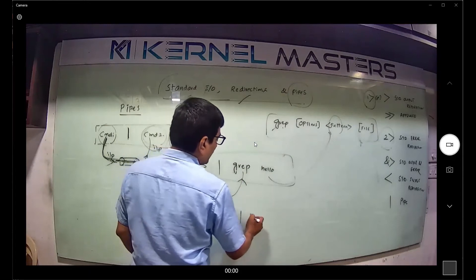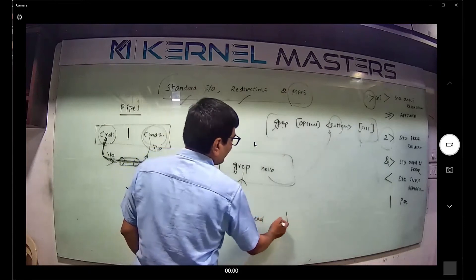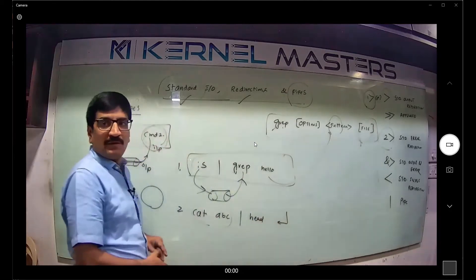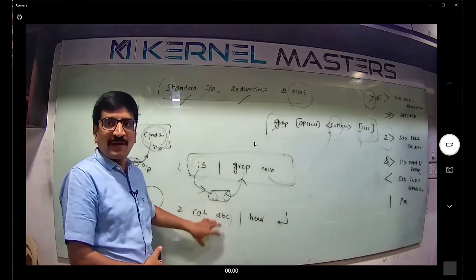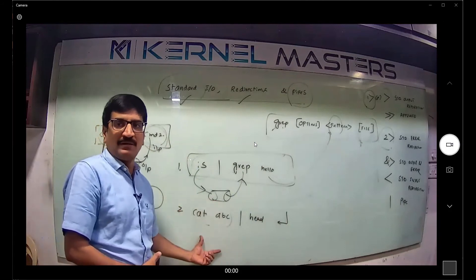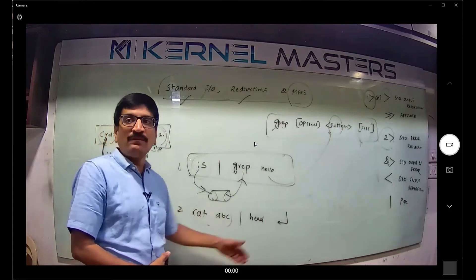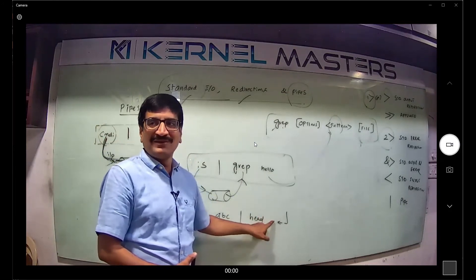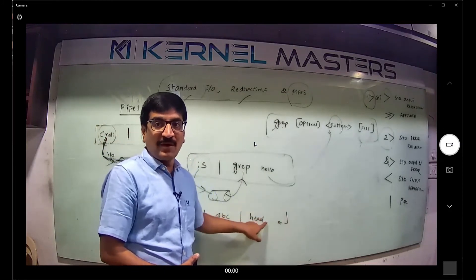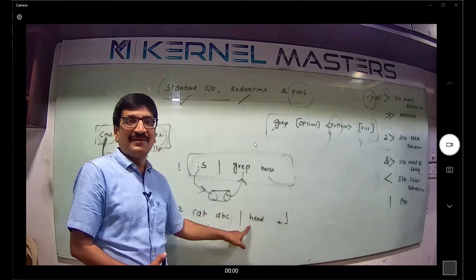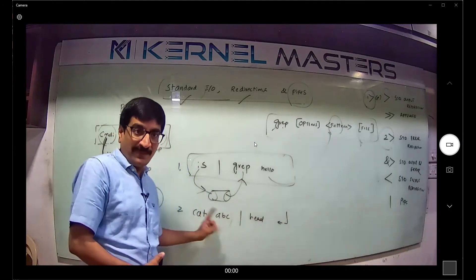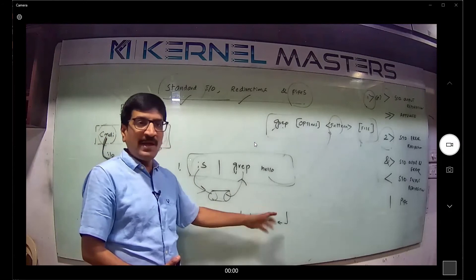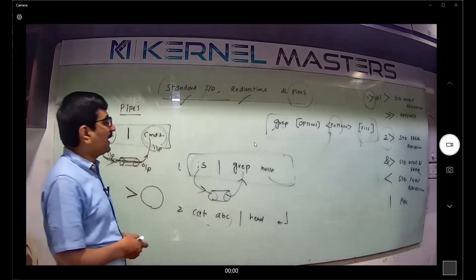For example: cat abc pipe head command. The cat command output — which is the content of the abc file — becomes the input from the previous command. The content of the abc file is passed as input to the next command through the pipe.